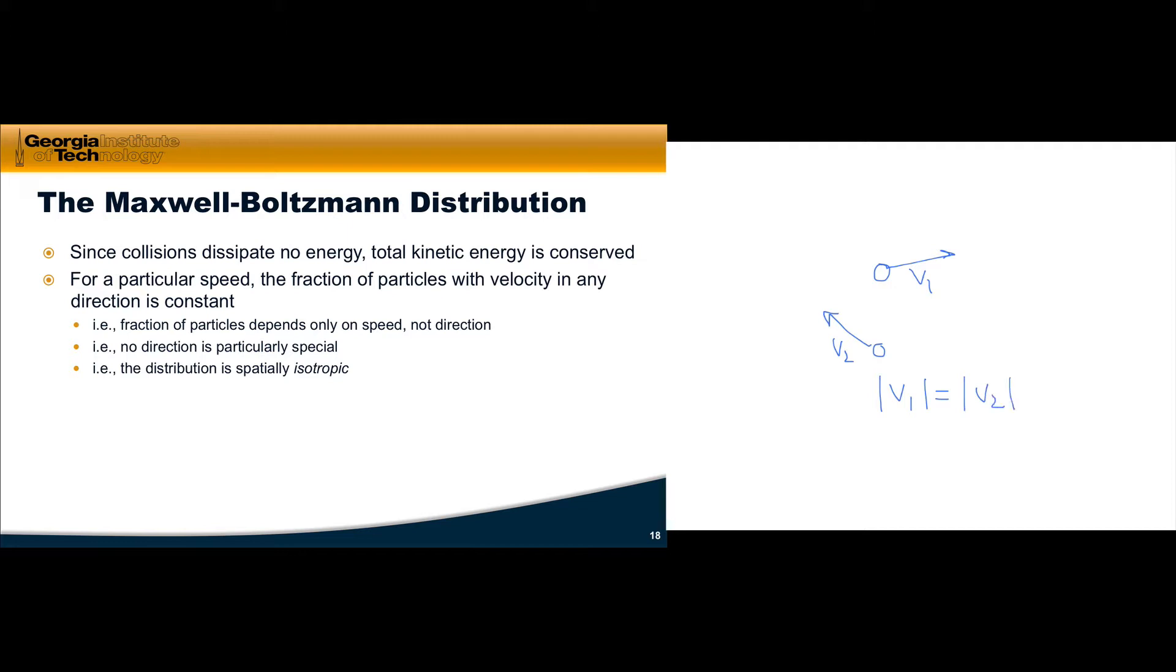The number of particles with velocity v1 should be equal to the number of particles with velocity v2, because their speeds are the same. That means that the fraction of particles depends only on the speed, only on the magnitude of the velocity, and not its direction. That means that no direction is particularly special.